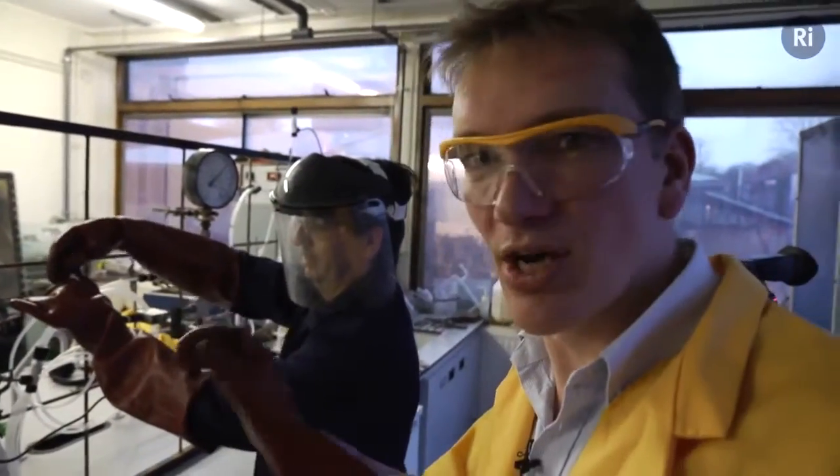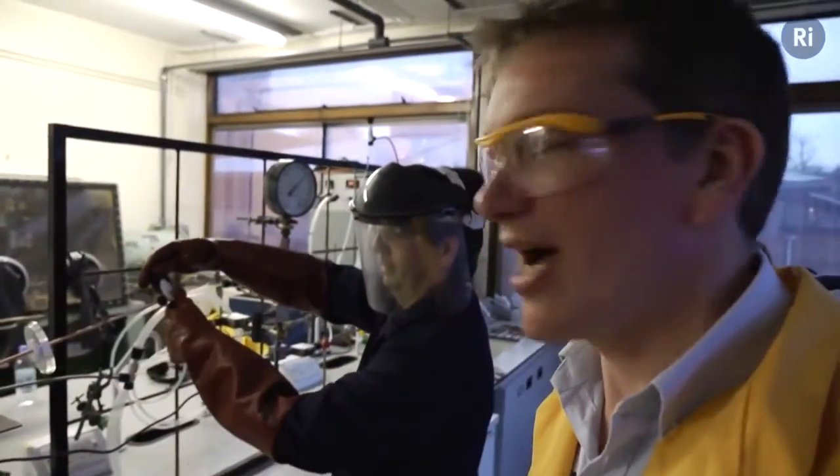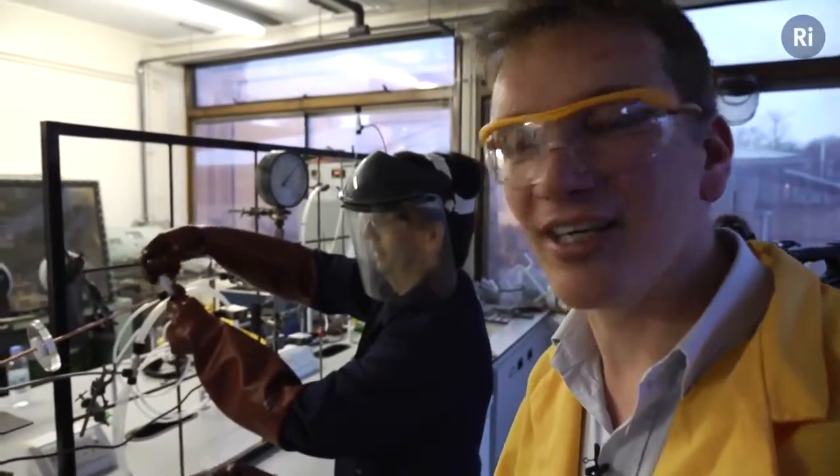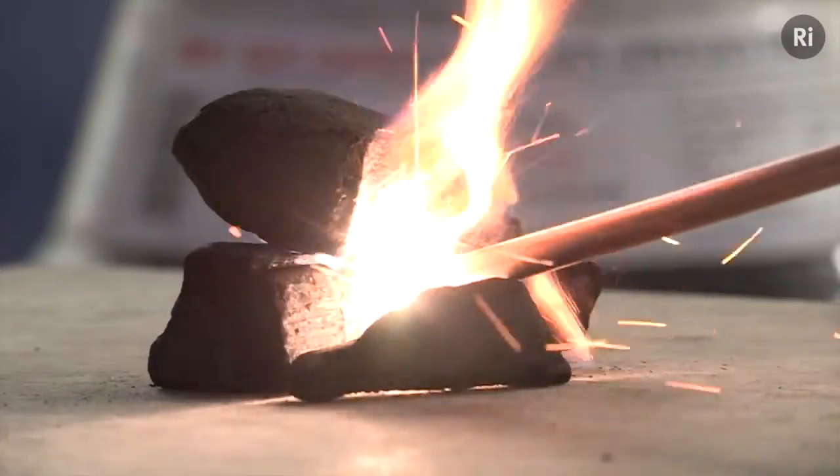This demonstrates the extreme reactivity of fluorine gas. This was a tiny quantity of fluorine being played onto the surface of the charcoal, and as soon as the two came into contact, there was a very violent reaction that generated a lot of heat, as you saw from the flames.